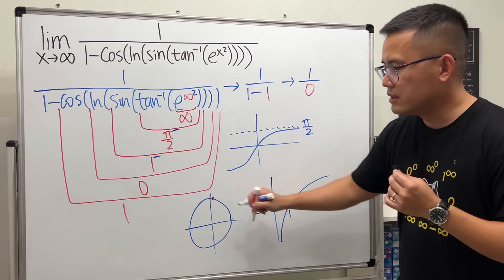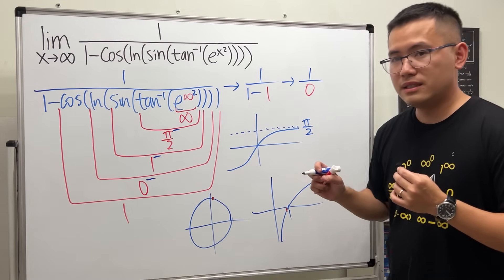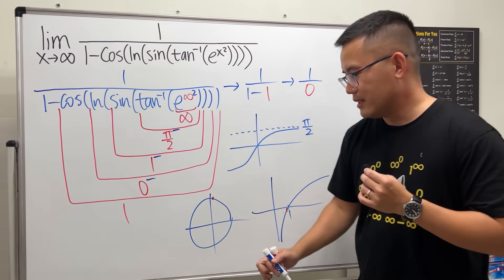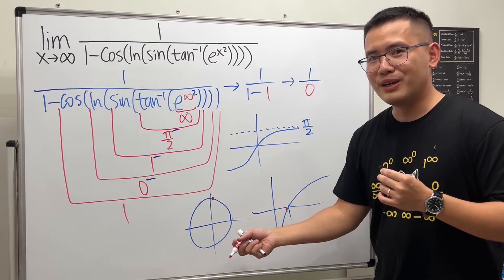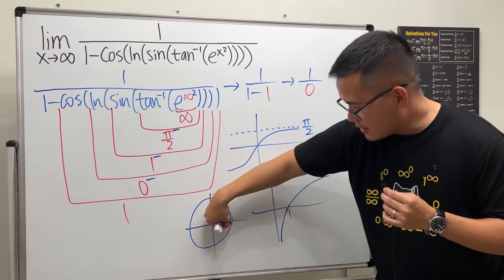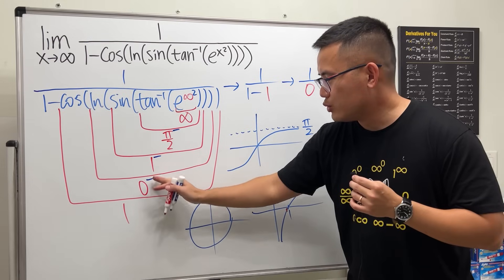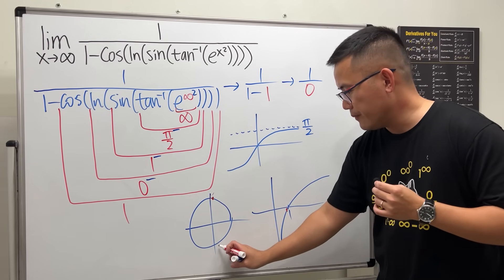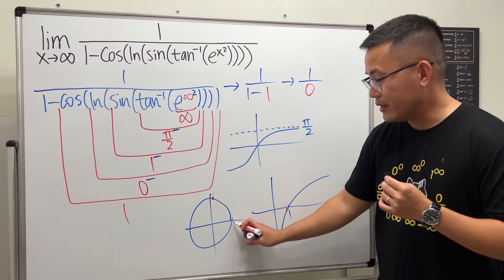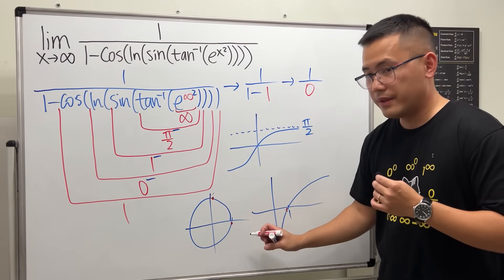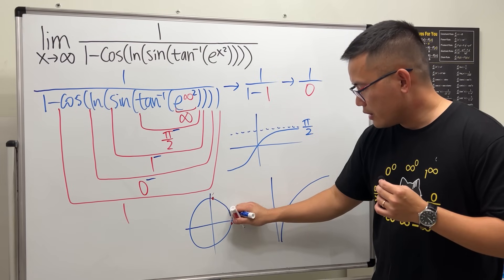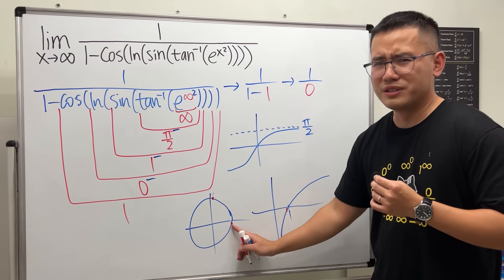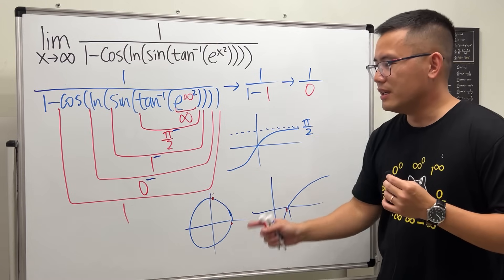Lastly, cosine of 0 minus. Let's go back to the unit circle. Zero radians is right here, and 0 minus means that we are approaching 0 from the negative radians, which is like this. The x value here is 1, but this right here is almost there, so it's actually less than 1. So in fact, this one is 1 minus.